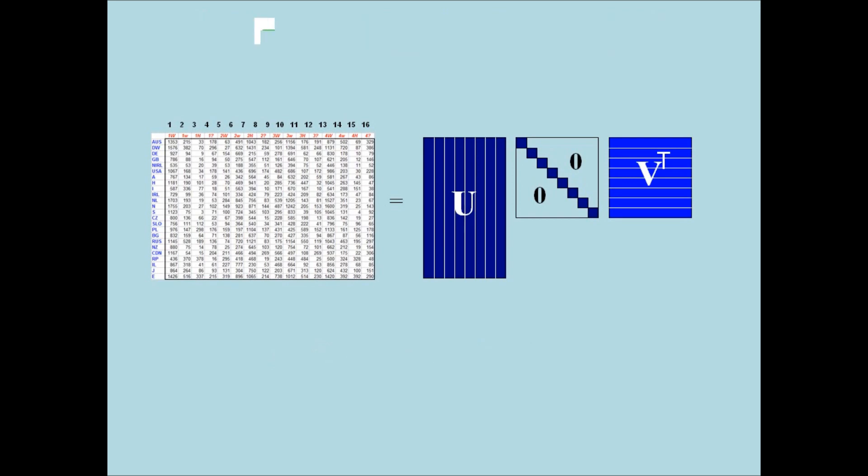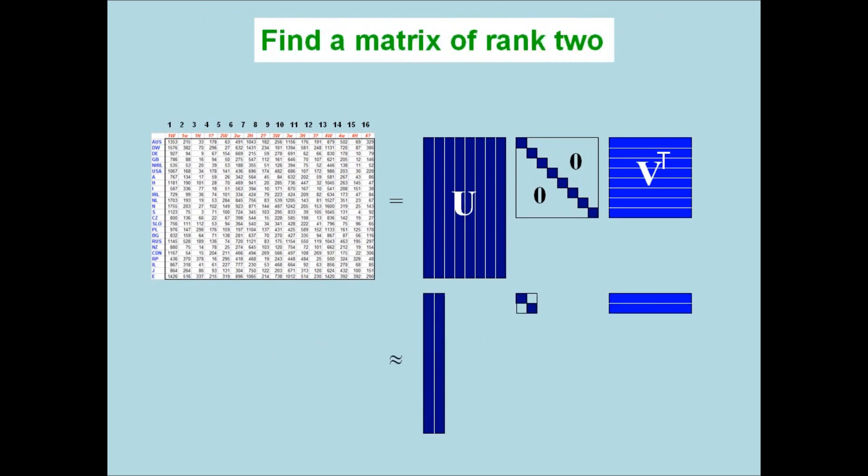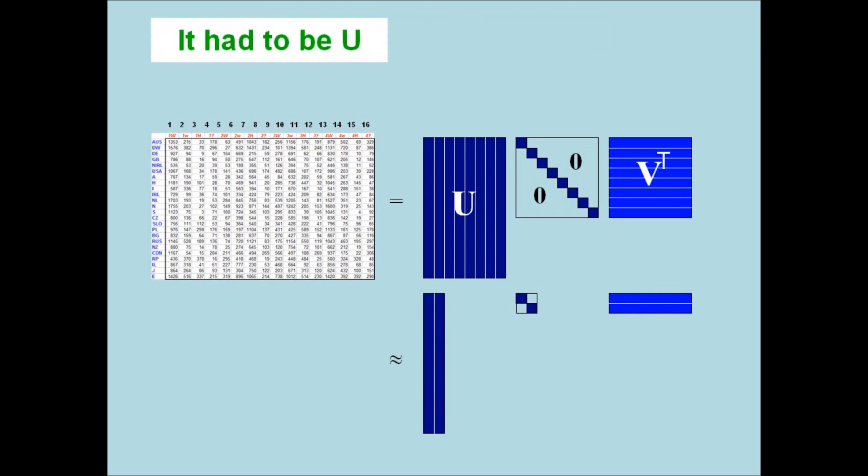Thanks to all this you can do, find a matrix of rank 2. It had to be U, D transpose V, the SVD.